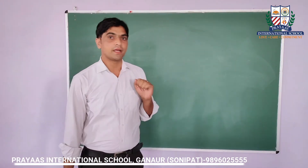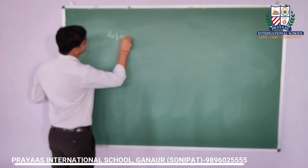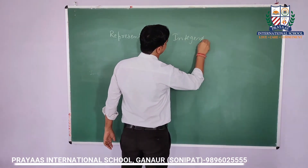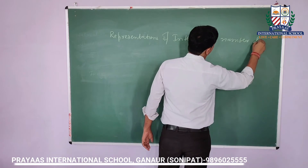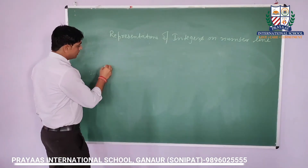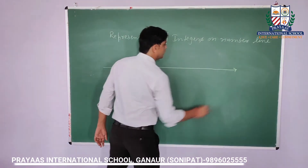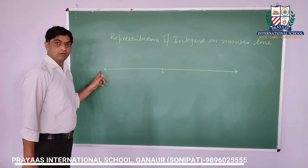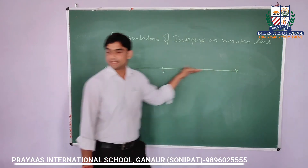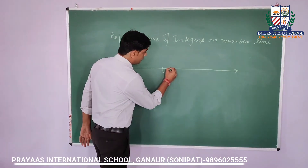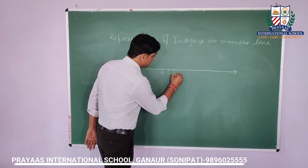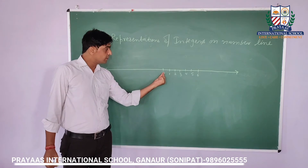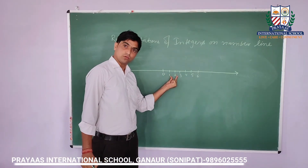Representation of integers on the number line. As I told you earlier, in the center of the number line we consider zero. The arrows indicate that we can extend the right-hand side up to infinity as well as the left-hand side up to infinity. On the right-hand side of zero, we start with positive integers: 1, 2, 3, 4, 5, 6, and so on. The space between 0 and 1 is the same as the space between 1 and 2 — this equal spacing will follow throughout.